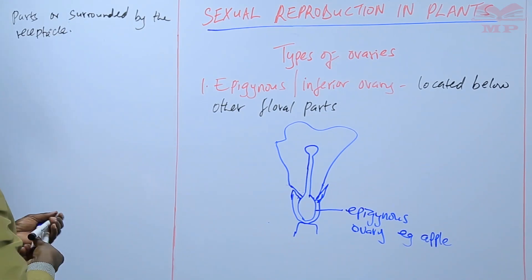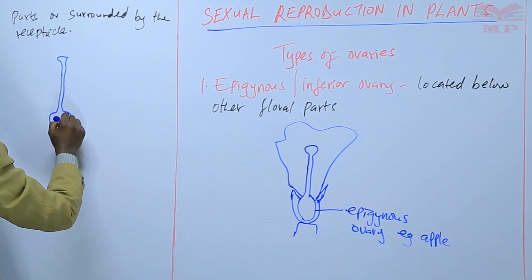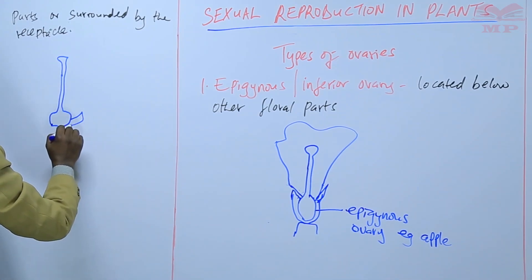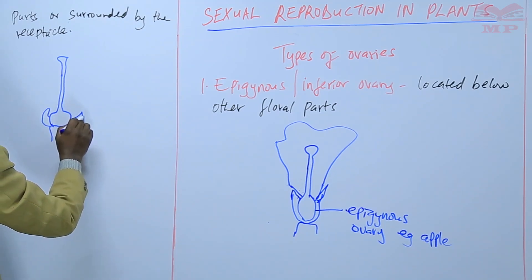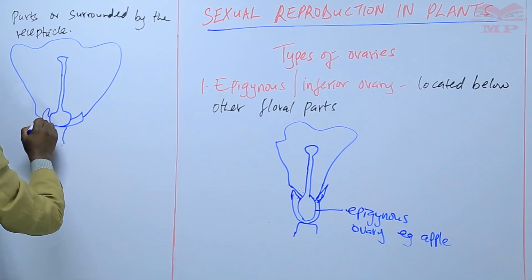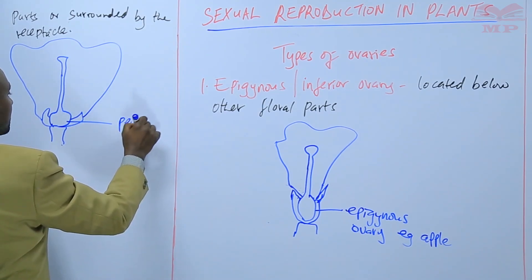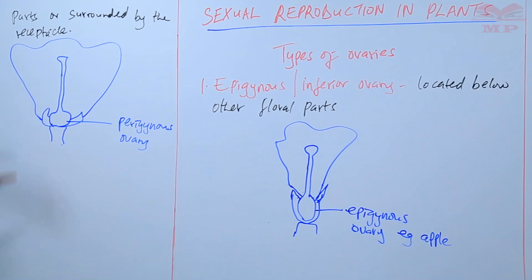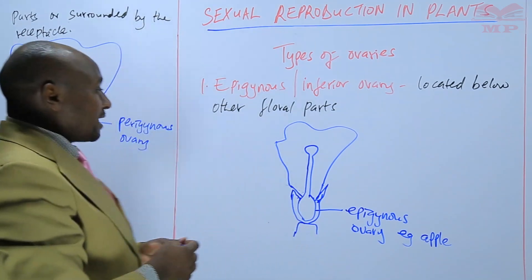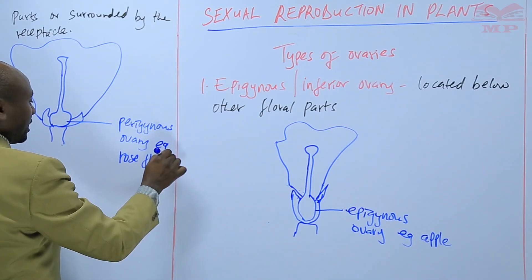You'll have an illustration of that. You have the ovary here, with the stigma and the style. In this case, the ovary is said to be perigynous. Together with the calyx and the corolla, they are emerging from almost the same position, so there is none that is superior to the other — we refer to that as being perigynous. An example is the rose flower.